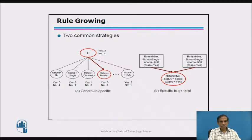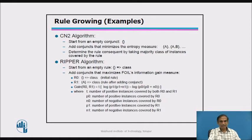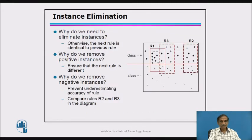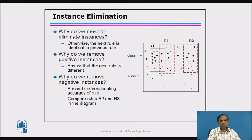Rule growing involves going deeper into the tree to grow a rule, moving from more specific to general or general to specific following a particular strategy. You may use CN2 or RIPPER algorithms as appropriate. Instance elimination removes certain instances to prevent overlap between rules and avoid undermining rule accuracy; you compare two rules and choose the better one.